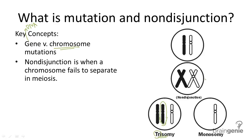If a cell is missing an entire chromosome, this is called monosomy. 'Mono' means one, so you can think of it as there being only one homologous chromosome in a diploid organism — in other words, the diploid count is short one chromosome.